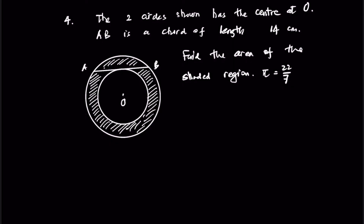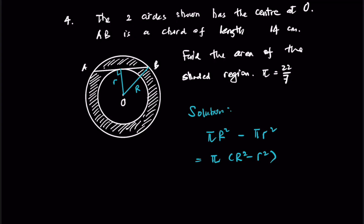Number four: two circles with a common center O. AB is a chord of length 14 cm. Find the area of the shaded region. The shaded area equals the area of the big circle minus the small circle. The line joining the center to the chord is perpendicular, giving the small radius r, while the line from center to point B is the radius R of the big circle.